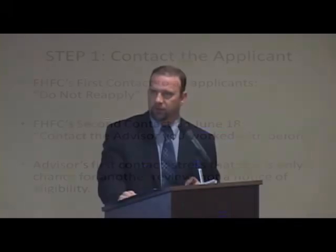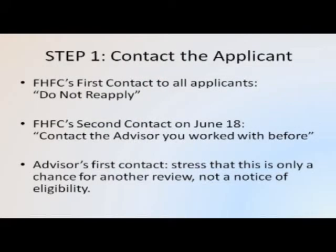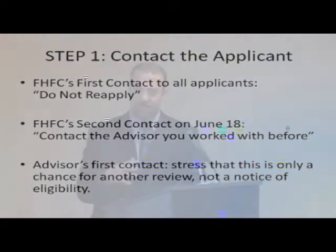By the time you, as the advisor, are contacting this applicant, they've already received some previous contacts. Your main message when you first contact them should be something like: I'm going to help you, I'm going to collect some information from you, you may be eligible for assistance — nothing is definite yet, nothing is guaranteed — I need to collect some information to see if you might now be eligible.